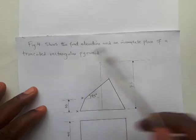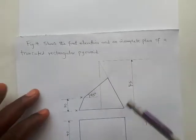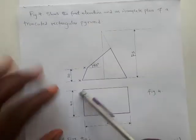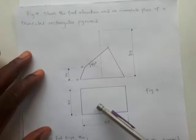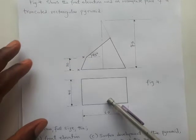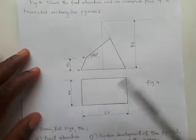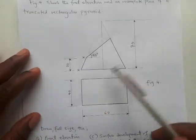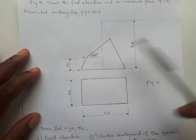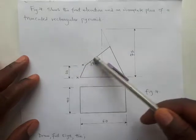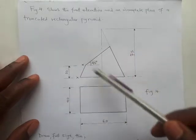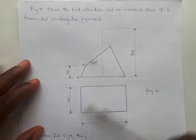It is a rectangular pyramid. The incomplete plan is the plan but it's not complete. This is the elevation - you have all the dimensions and everything you need to construct the elevation and the plan.